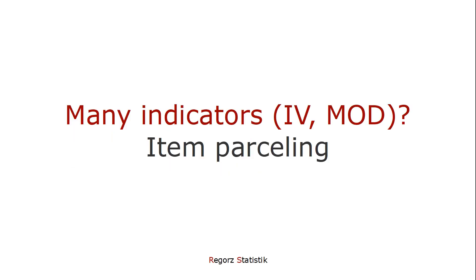The second thing: what do you do if you have many indicators for the independent variable and the moderator? For example, if you have 10 indicators for the independent variable and 6 for the moderator, you would need 60 interaction terms, and a very large number of possible error covariances. A possible solution is item parceling, where you combine two or more items into item parcels, thereby reducing the number of indicators.